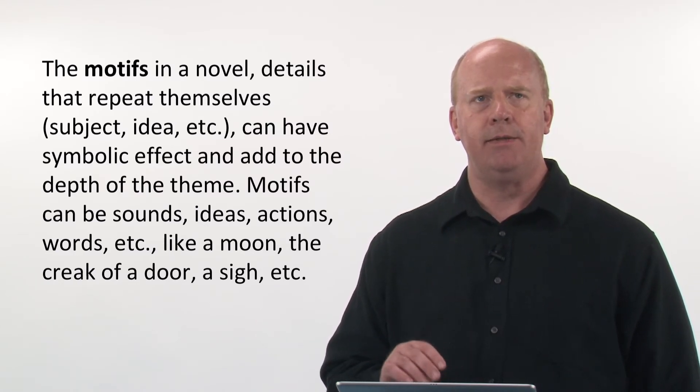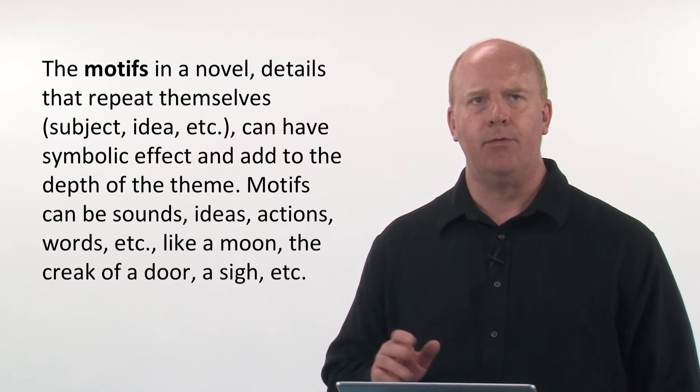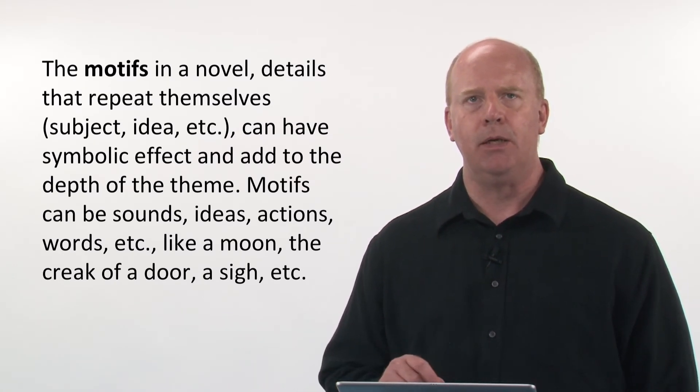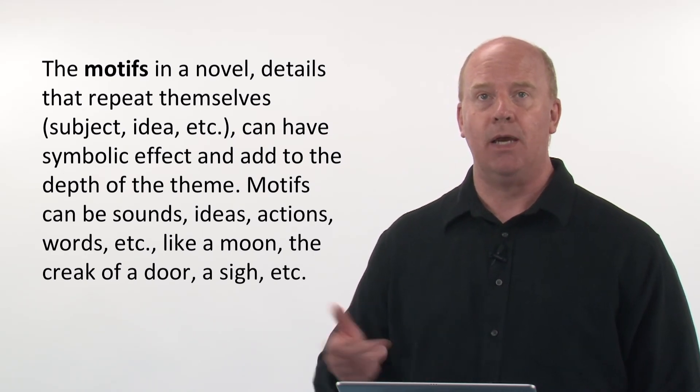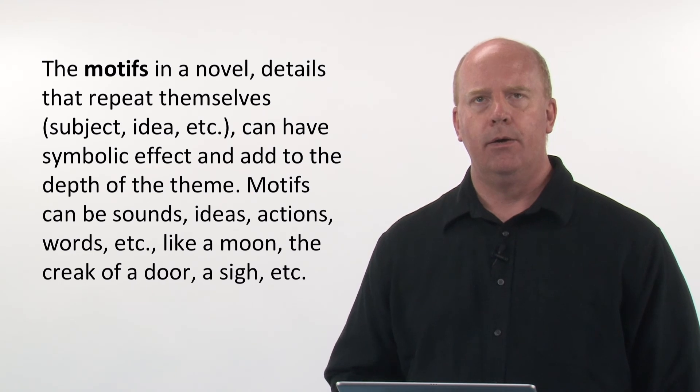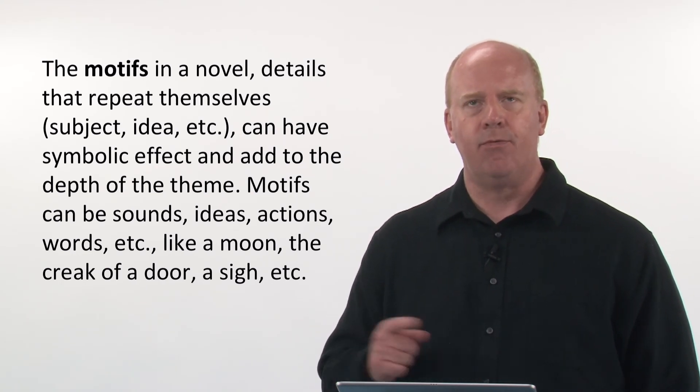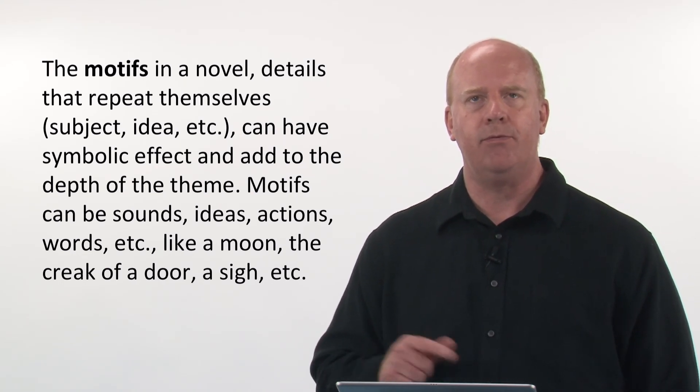These can be ideas, actions, or words, like maybe a moon. A moon might show up a couple times in the novel. It could be the moonlight. It might be a creak of a door or a sigh. Sometimes you might have that repeat itself a lot in the novel, and that's the motif, and that would have some significance in the theme.